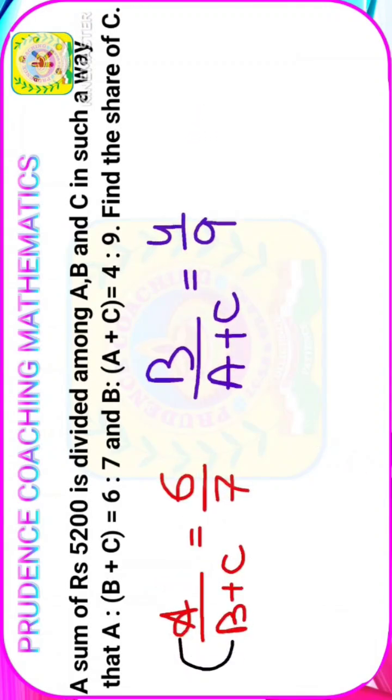Here, on the left-hand side, if we add, you will get A plus B plus C. Here also, if we add, you will get A plus B plus C. And on the right-hand side, if we add 6 and 7, you will get 13, and here 4 plus 9 will also give you 13.